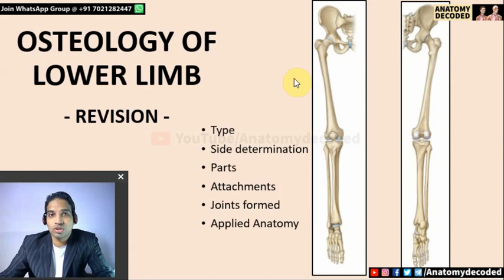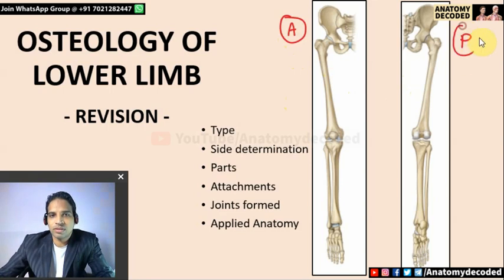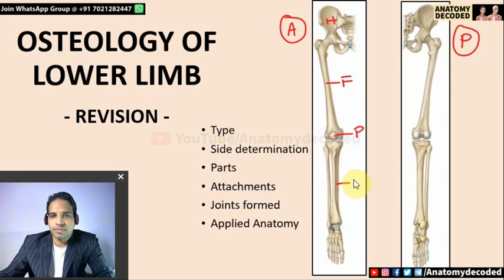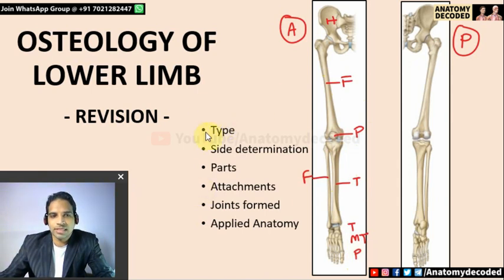Hello everyone, welcome to this session on osteology of the lower limb. In this session we'll be revising all the bones of the lower limb. Here we can see the bones from the anterior aspect and from the posterior aspect. The bones are: hip bone, femur, patella, tibia (medial), fibula (lateral), and in the foot: tarsals, metatarsals, and phalanges.